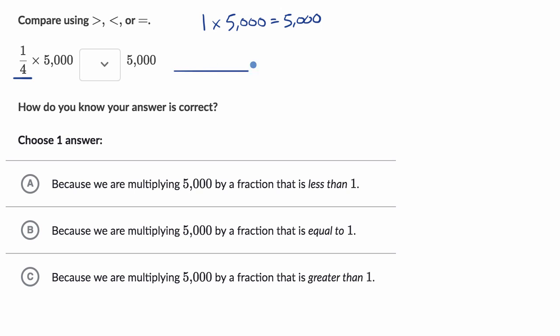Well, one way to imagine it is on a number line. If this is zero, this is 5,000. This would be halfway between zero and 5,000. And if I then make the space between zero and 5,000 into fourths, this would be one-fourth of the way between zero and 5,000. So this value right over here, that is one-fourth times 5,000.